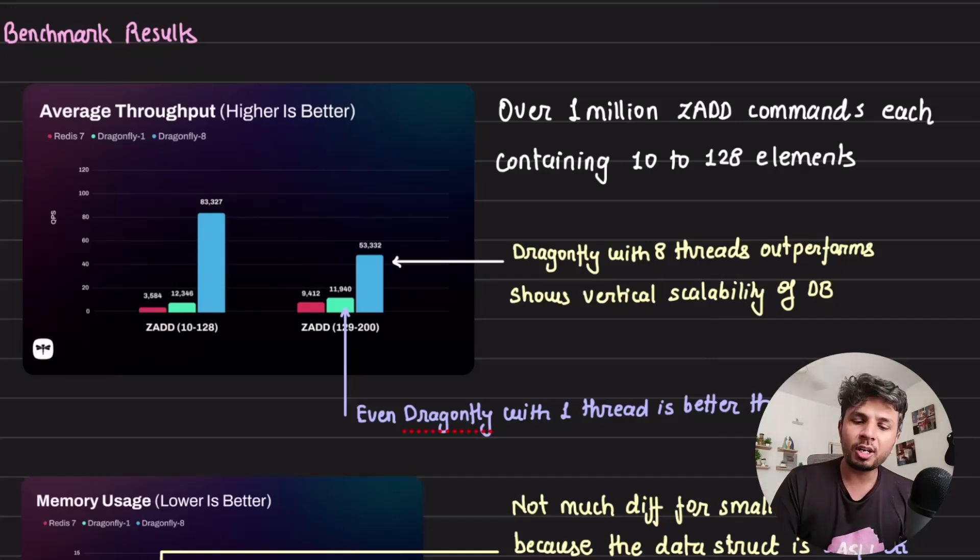When they benchmarked the B+ tree based implementation of sorted set versus the skip list implementation of Redis, the results were amazing. For single threaded Redis implementation with ZADD command, they fired over a million ZADD commands at DragonflyDB and Redis, where each command contained 10 to 128 elements, and a second set with 129 to 200 elements.